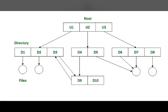To summarize, directory structure in operating system has many categories: the first is single level directory, second is two level directory, third is tree structured directory, fourth is acyclic graph directory, and the fifth is general graph directory structure.